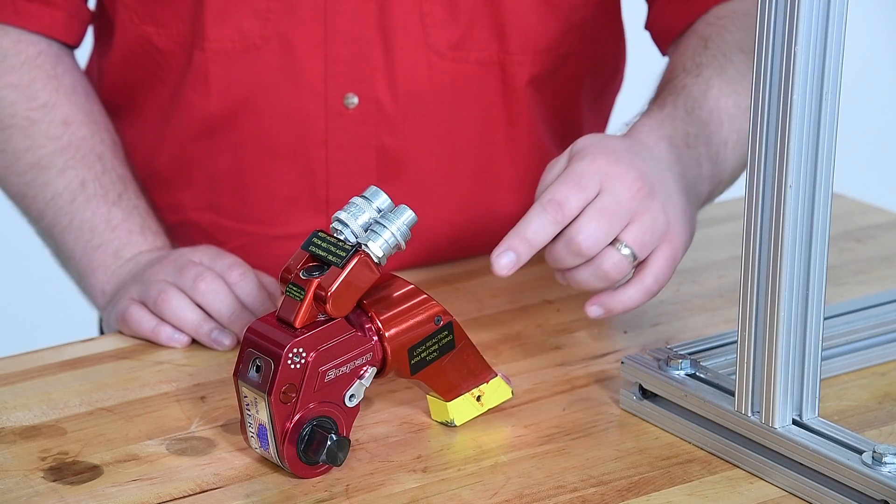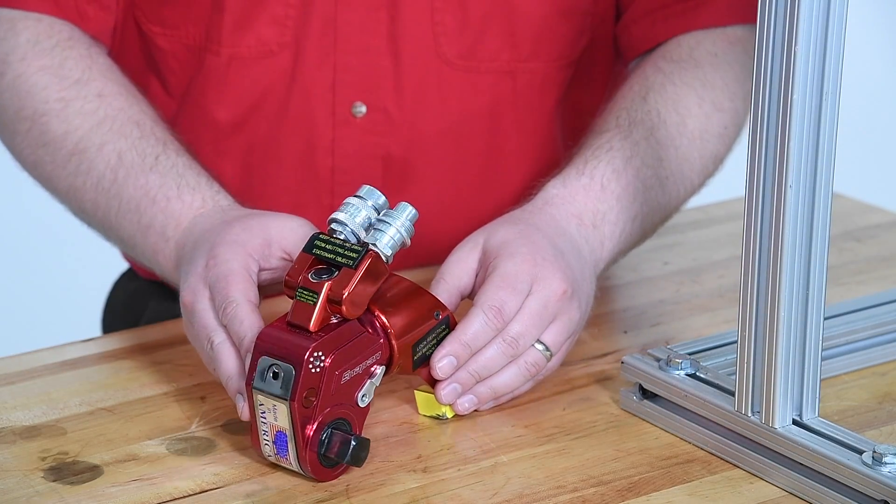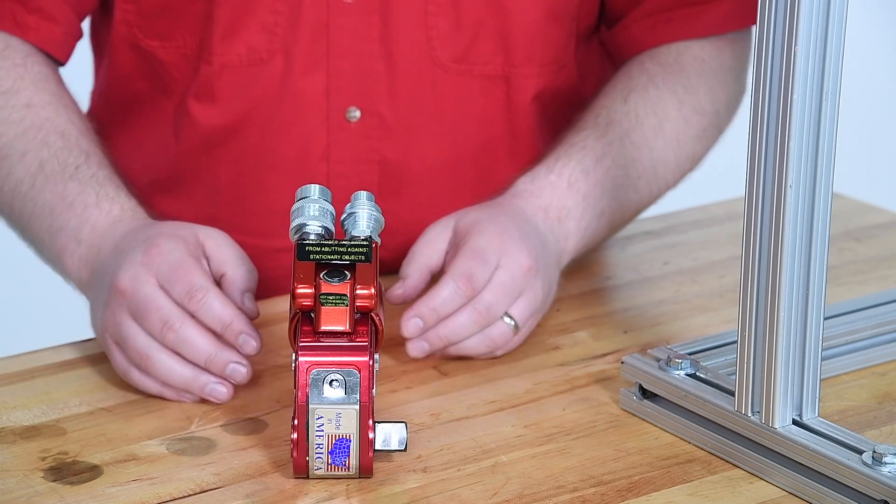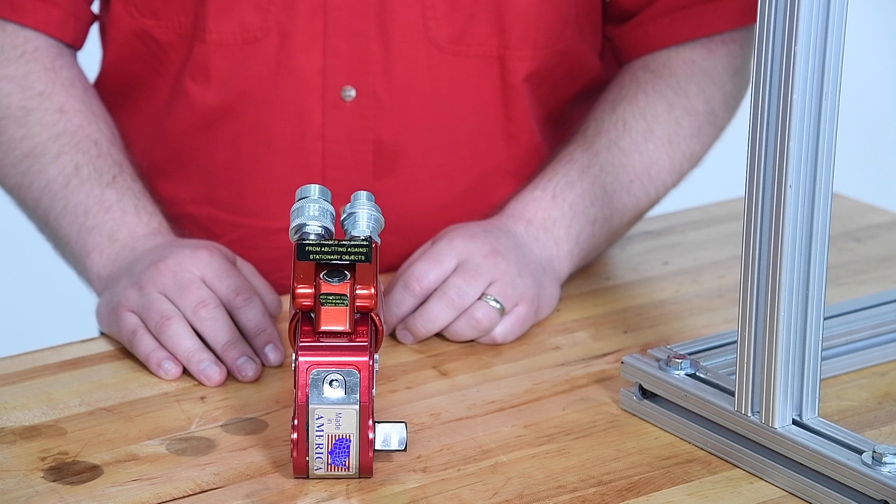Wrench direction is determined by the square drive position. If the drive is on the right, it's set up to turn to the right or clockwise. When the square drive is on the left side of the wrench, it's set up to turn left or counterclockwise.